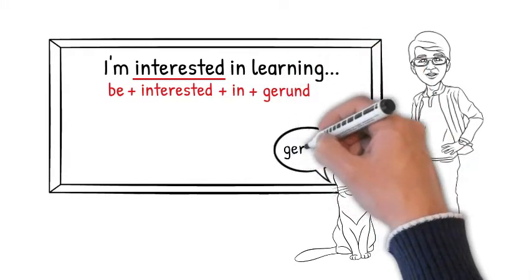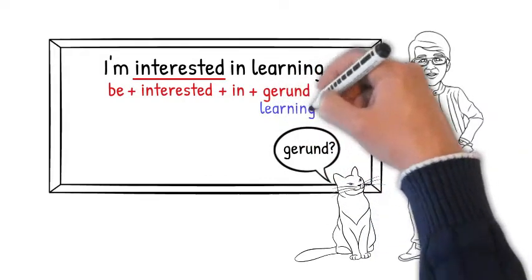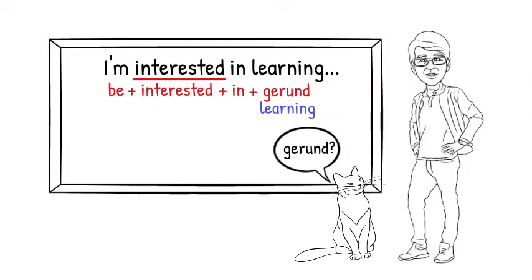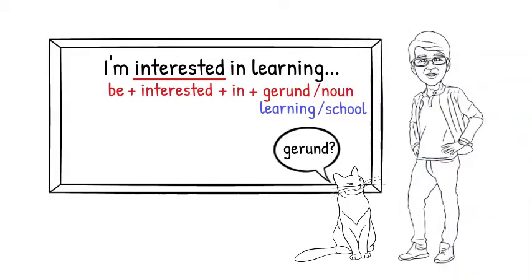It's a gerund. A gerund is simply an ing verb used as a noun. We can tell when it's a gerund because we can also use a noun in its place. For example, we could say, I'm interested in learning, or I'm interested in school.